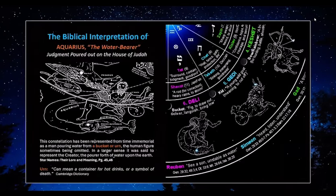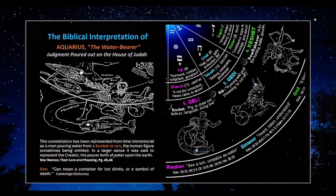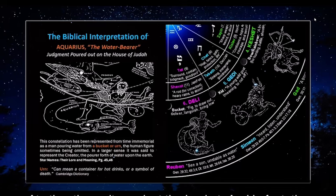Now let's look at our Hebrew elements. This is the biblical interpretation of Aquarius, the water bearer, and it's going to relate to judgment being poured out on the house of Judah, represented by the southern fish. We read here from Star Names: Their Lore and Meaning by Richard Allen Hinckley — he says this constellation has been represented from time immemorial as a man pouring water from a bucket or an urn, the human figure sometimes being omitted. The Hebrew name for this sign, Delhi, implies simply a bucket — not a water pourer, but just a bucket — with the water being poured out by an unseen hand.